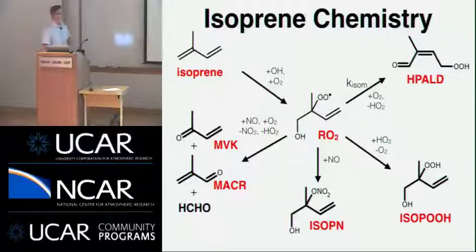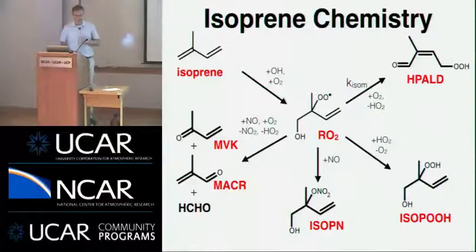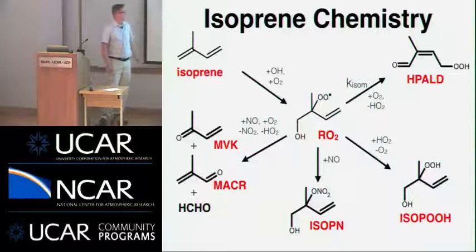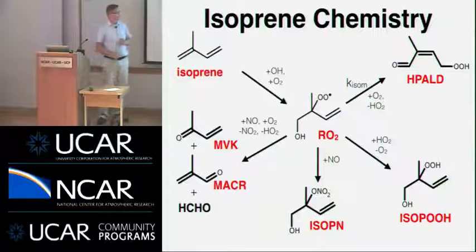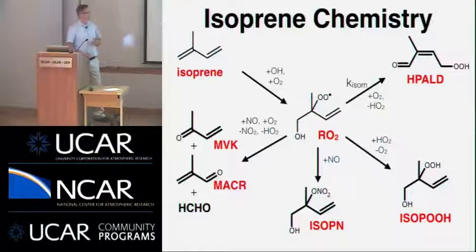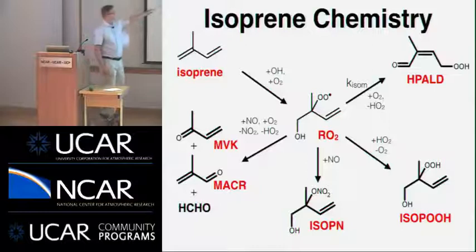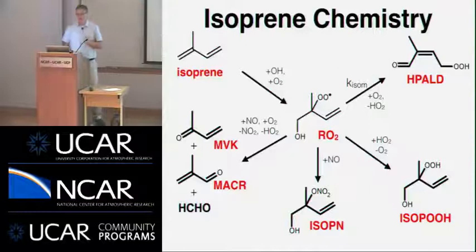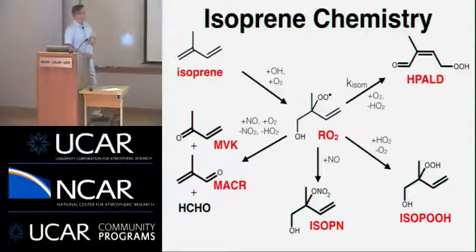Most isoprene, because it's emitted in the daytime when there are photons around and OH radicals around, reacts with OH. There is some isoprene left at nighttime that reacts by different mechanisms with NO3 primarily. Ozone also reacts with isoprene, but the amount that reacts with ozone is only about 10%. So this talk will focus mostly on just the OH chemistry of isoprene. Isoprene is a conjugated diene molecule which gives it a very rich chemistry that our community hasn't really fully appreciated until the past six or eight years.